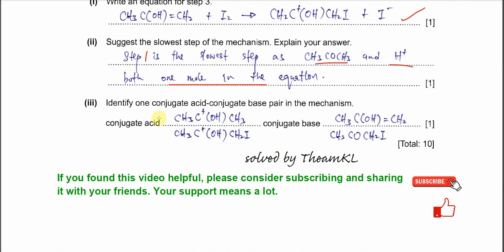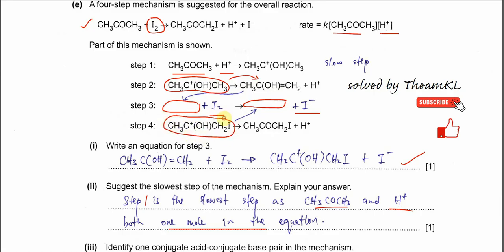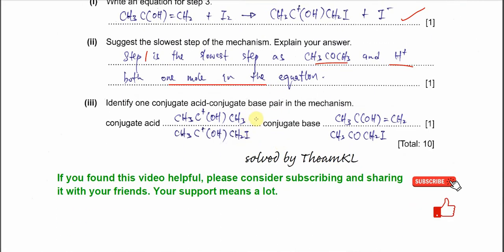Part E(iii): identify one conjugate acid-base pair in the mechanism. A conjugate acid-base pair differs by one proton. We can use Step 2 or Step 4. In Step 2, one species releases a proton — that species is the acid and its conjugate base differs by one proton. In Step 4, similarly, one species releases a proton to form its conjugate base. Either pair from Step 2 or Step 4 is an acceptable answer.